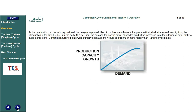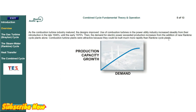As the combustion turbine industry matured, the designs improved. Use of combustion turbines in the power utility industry increased steadily from their introduction in the late 1940s until the early 1970s. Then, the demand for electric power exceeded production increases from the addition of new Rankine cycle plants alone. Combustion turbine plants were attractive because they could be built much more rapidly than Rankine cycle plants.